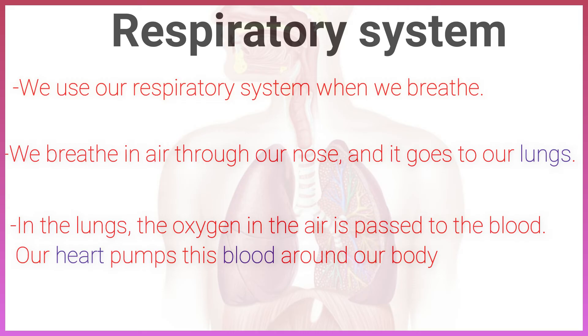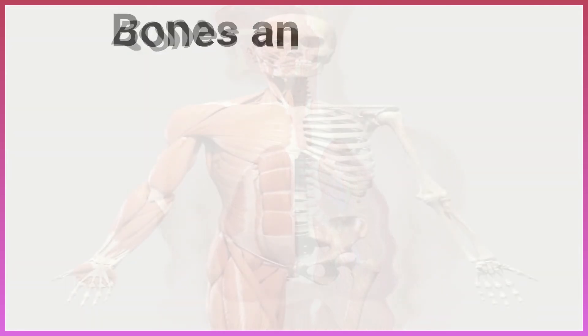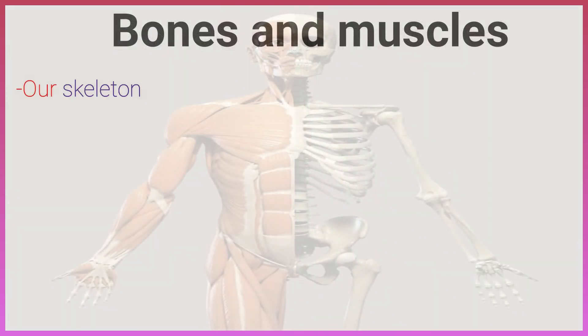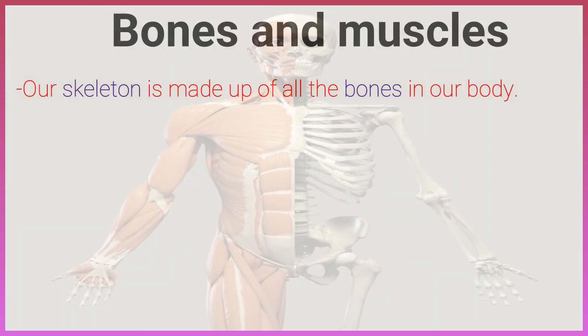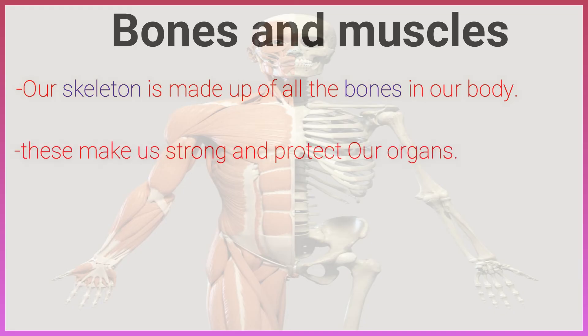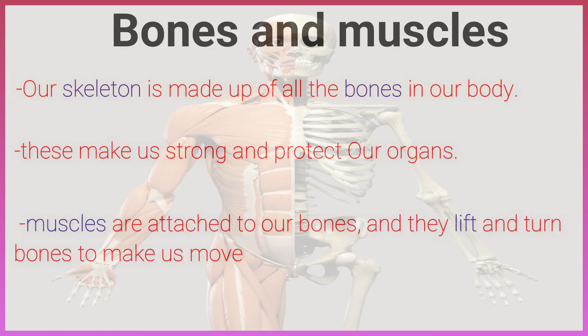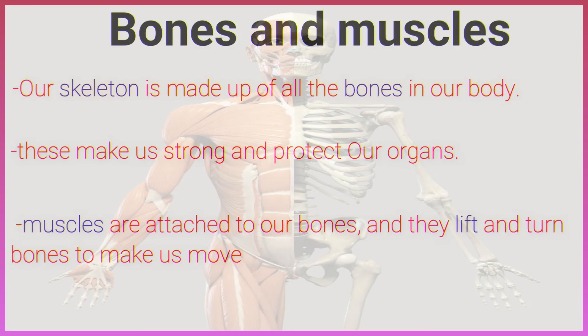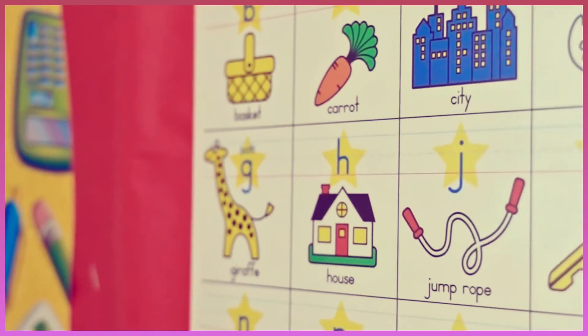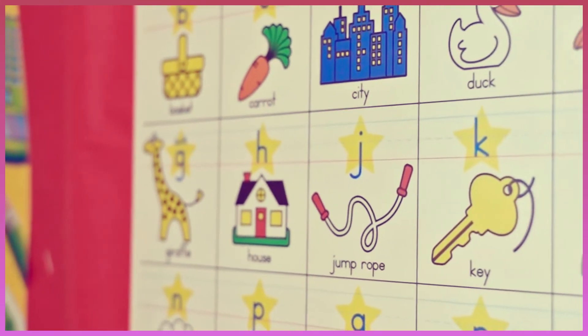Bones and muscles: our skeleton is made up of all the bones in our body. These make us strong and protect our organs. Muscles are attached to our bones, and they help us lift and turn bones to make us move. Finally, look at the picture and tell us what it is.